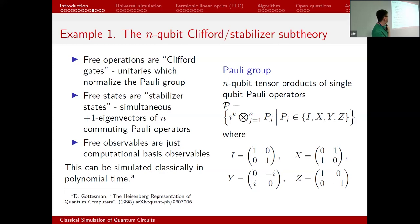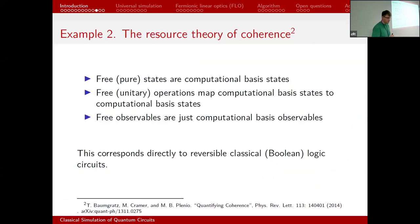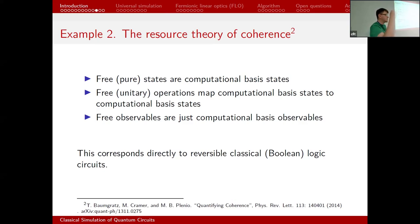The entanglement in the Clifford stabilizer sub-theory is specific — you can have large amounts of entanglement, but in very specific ways. My second example is the resource theory of coherence. Here, free states are computational basis states — vectors with a single 1 somewhere and zeros elsewhere. Free unitary operations are just permutations. Free observables are computational basis observables. If you think about this, you quickly realize this setup is exactly classical reversible logic circuits — OR, AND, NOT gates — so it's trivially classically simulable.